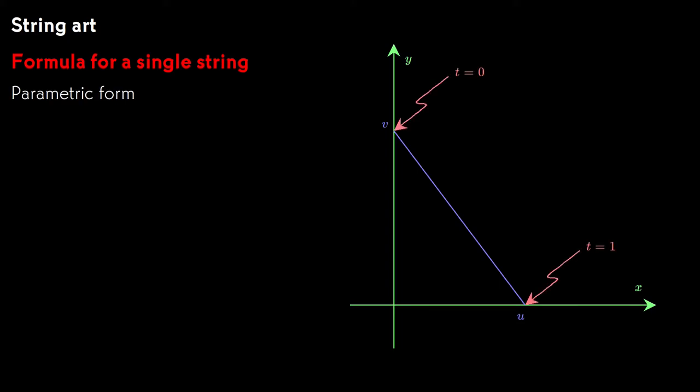We'll express the formula for the string in parametric form. Introduce a parameter t that varies from 0 at one endpoint to 1 at the other. The x-coordinate varies linearly from 0 at t equals 0 to u at t equals 1, so x equals u times t.